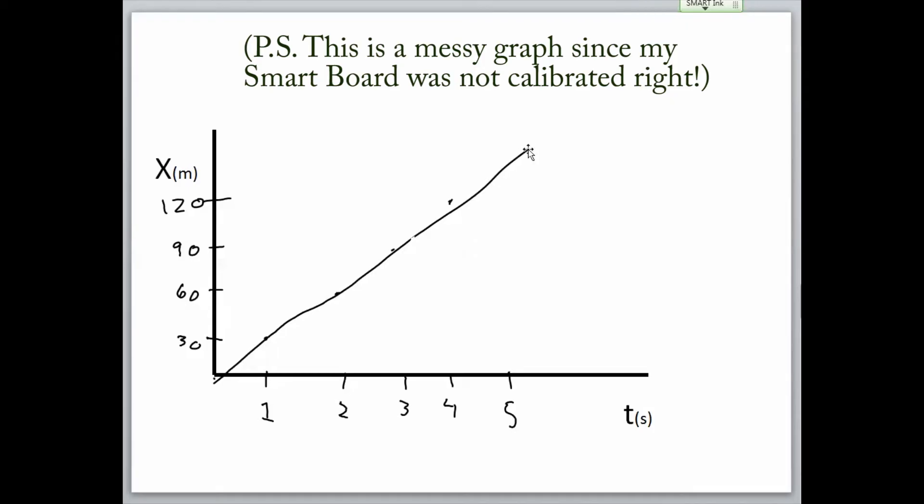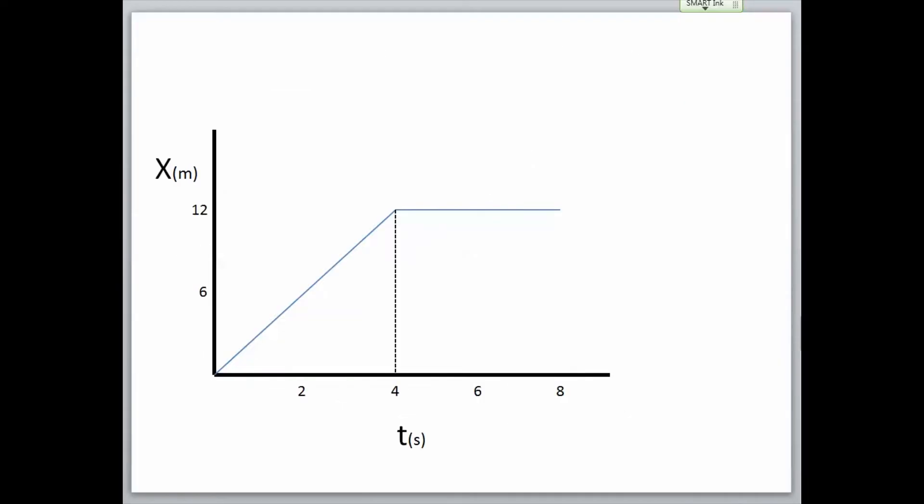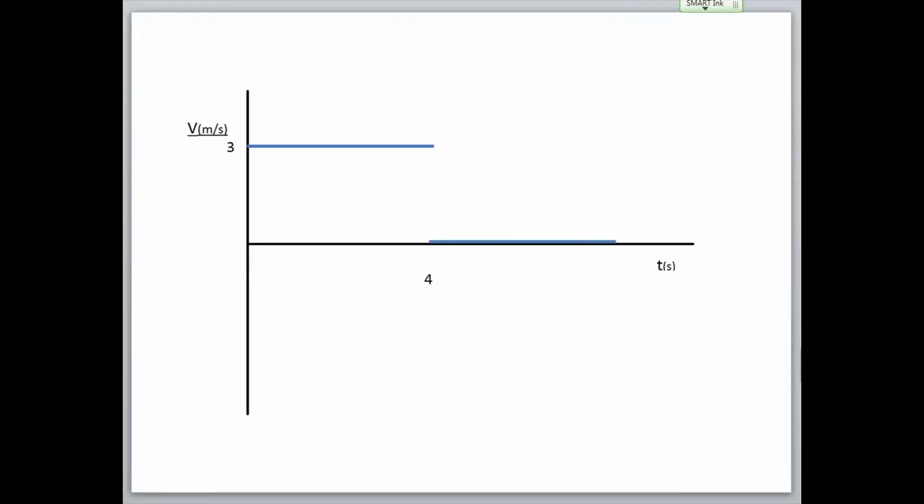Now that we've learned about position and velocity graphs, let's try to read a few graphs and determine the motion of the object. Looking at this first graph, I notice it is a position graph. It travels at a constant velocity for 4 seconds, then stops for another 4 seconds. The average velocity for the first 4 seconds is 3 meters per second since the slope of the line is 3 meters per second. I can tell that the object stopped since the slope of the line at the end is zero, meaning the velocity is zero. It's not moving. And this is what the velocity graph would look like for the same motion. We see the object moving at 3 meters per second for 4 seconds, then stops, so its velocity is zero.